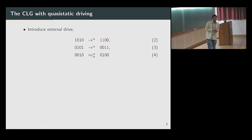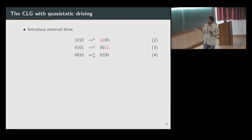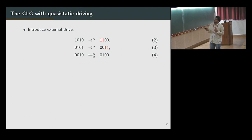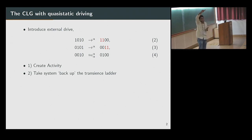Now let's introduce an external drive. In the normal conserved lattice gas, an isolated particle jumping to a neighbor cannot happen. We let it happen at a rate alpha, which is small. So an isolated one can jump to either of its neighbors at rate alpha. This drive firstly creates activity. Isolated ones can also hop around until they find another one, which also creates activity. This takes the system back up the transient ladder at rate alpha, while the system is coming down the transient ladder at rate one.